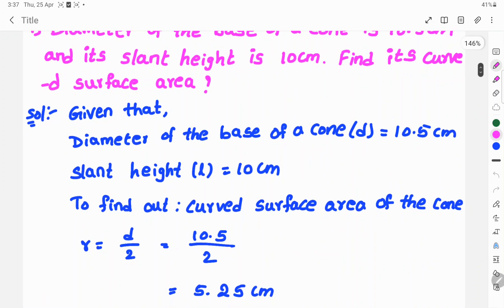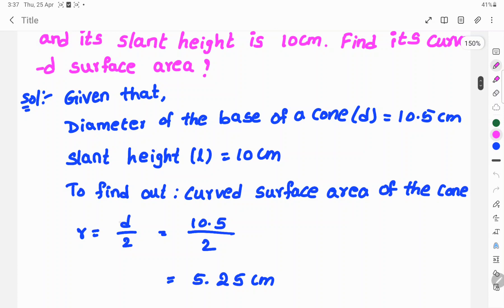First you find out radius. Radius is equal to diameter by 2. Diameter is 10.5, so 10.5 by 2. 2 cancels in 10.5, giving 5.25 times.